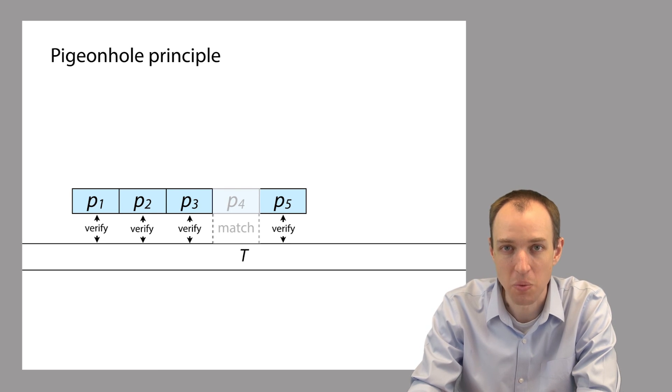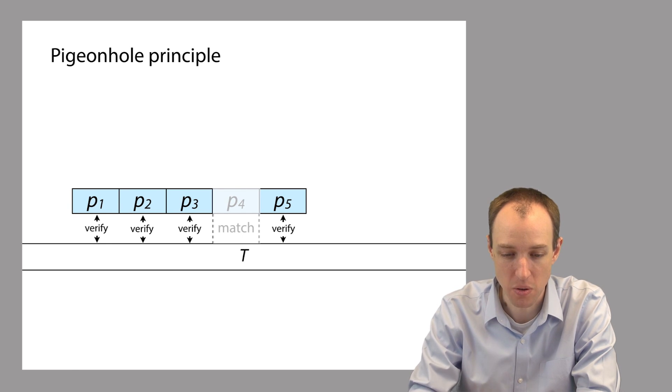Just like that here, when we have a partition that matches exactly within T, we have to use a verification step to determine whether the entire string P occurs in the neighborhood of that partition hit. So that's what we're doing here.